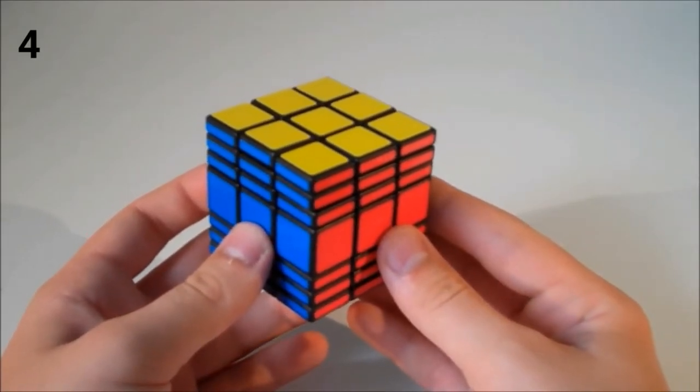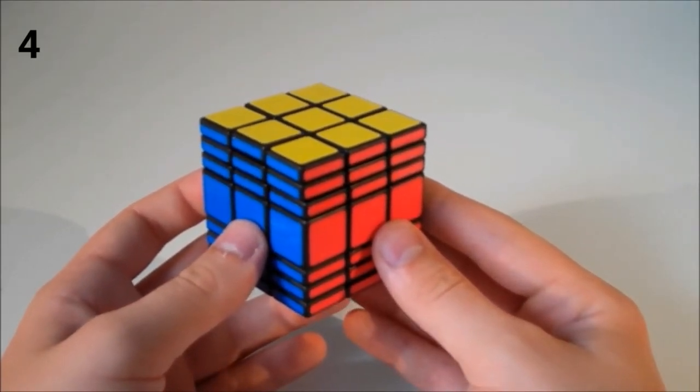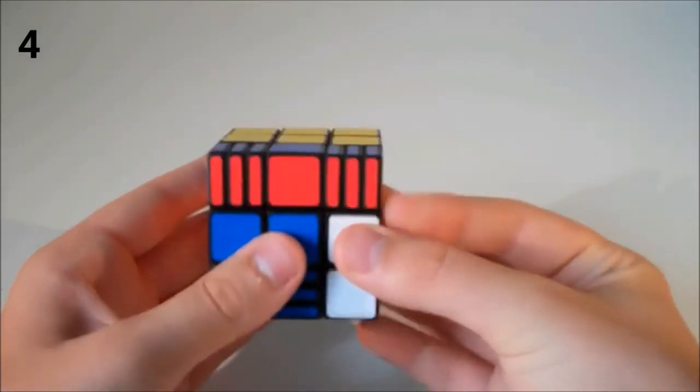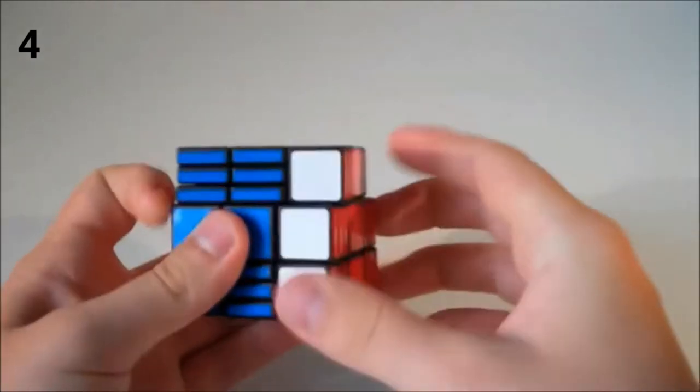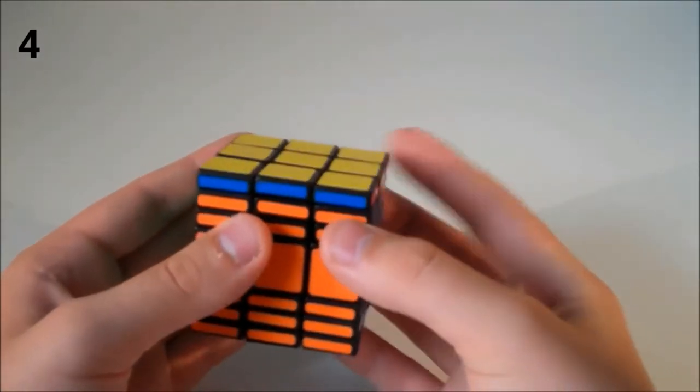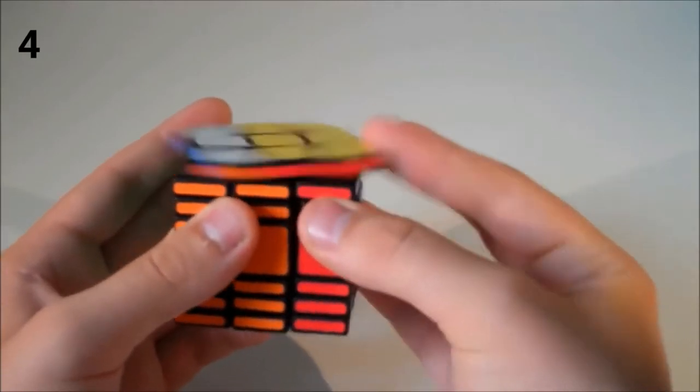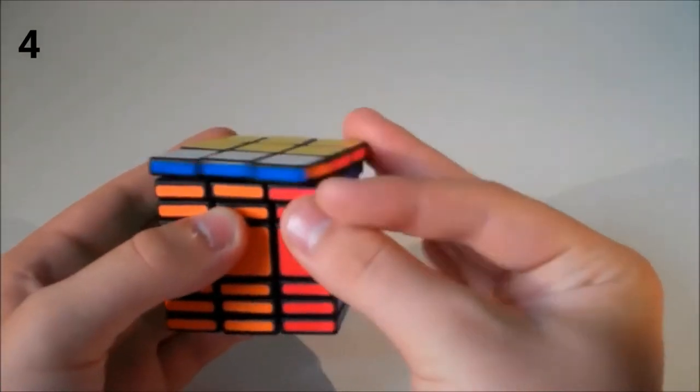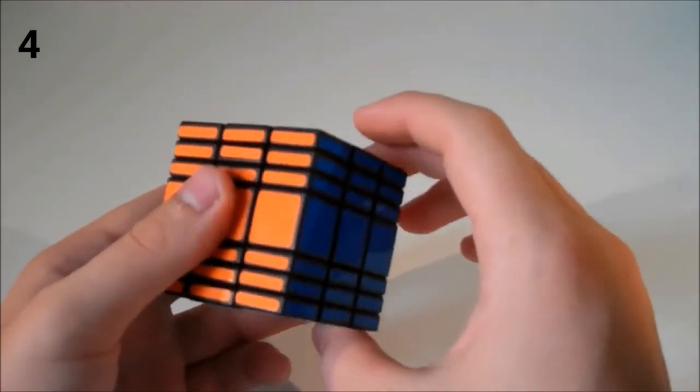At number 4 we have the Cube For You 3x3x7. As you probably know, I love cuboids and this is one of my favorites. It's the biggest 3x3xN puzzle that I have and it's my favorite to solve. I just love the look of this puzzle and how it turns. It's just a really great puzzle and I really enjoy solving it.